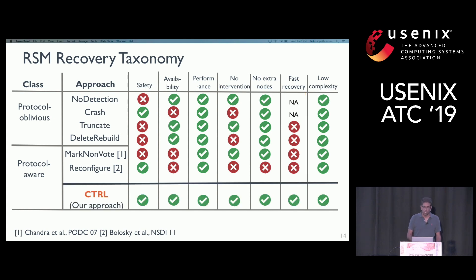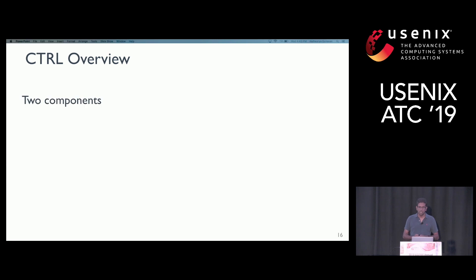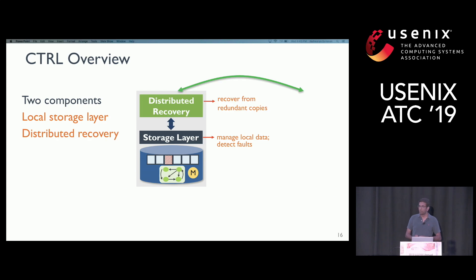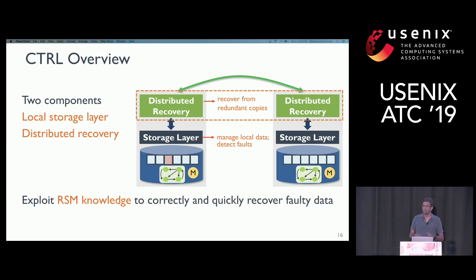In contrast, our approach — control — provides both safety and high availability, does not affect common-case performance, does not require manual intervention, and can recover fast. Here is a high-level overview of control. It has two components: the local storage layer, responsible for managing local data on each node and carefully detecting storage faults; and the distributed recovery layer, which uses redundant copies on other nodes to recover faulty data. Both layers carefully exploit RSM-specific knowledge.